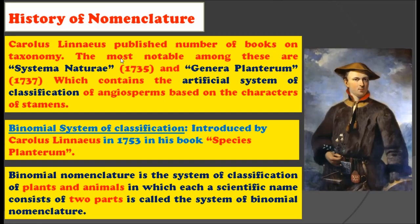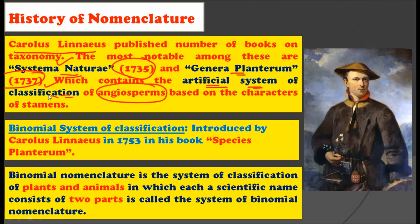What is the history of this nomenclature? As you may have heard, Carolus Linnaeus published a number of books on taxonomy. The most notable of these are the Systema Naturae published in 1735, and Genera Plantarum published in 1737, which contains an artificial system of classification of angiosperms based upon the characters of stamens.